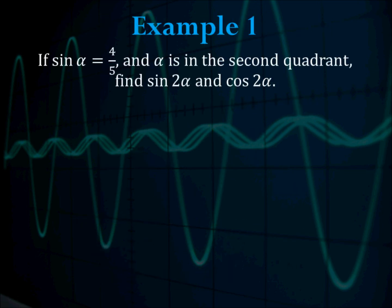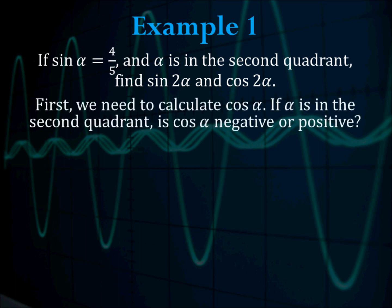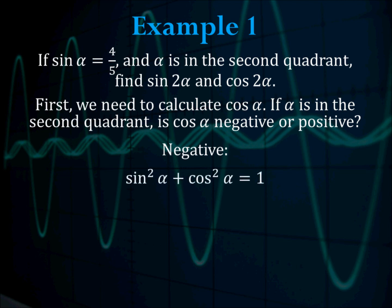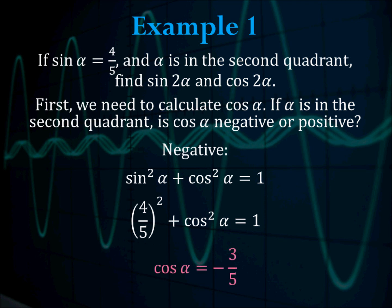Example 1: if sine alpha is 4/5 and alpha is in the second quadrant, find the sine of 2 alpha and cosine 2 alpha. The first thing we need to do is calculate cosine of alpha because we need it for both double-angle formulas. If alpha is in the second quadrant, x is negative in quadrant 2, so cosine of alpha is negative.